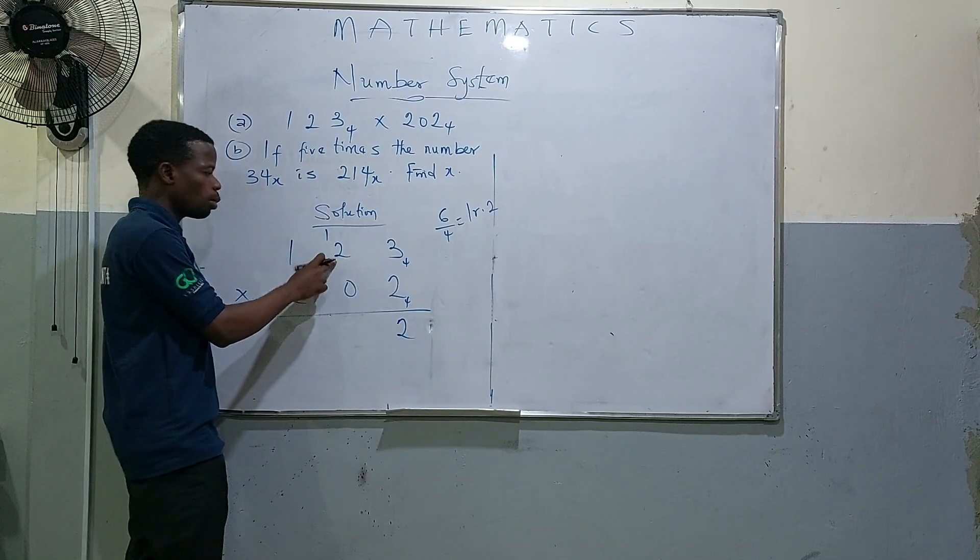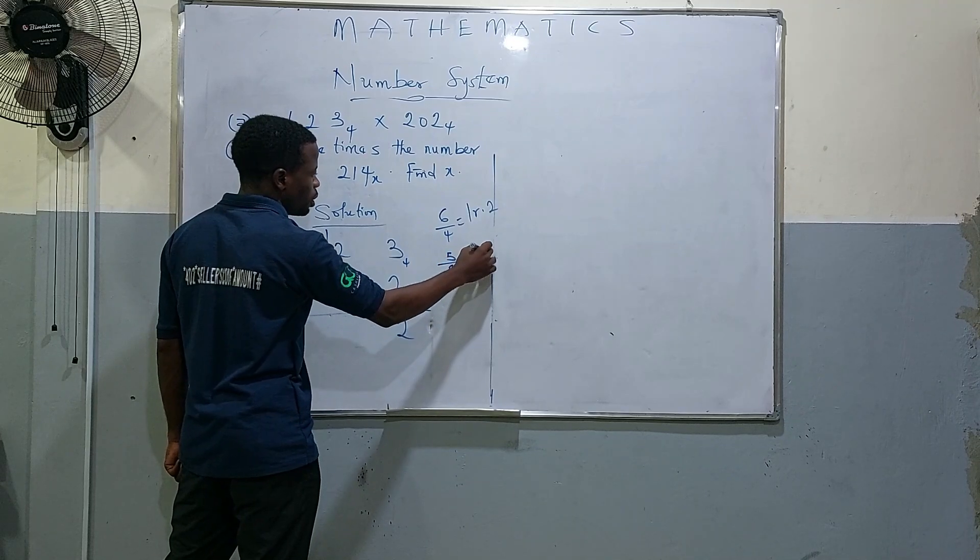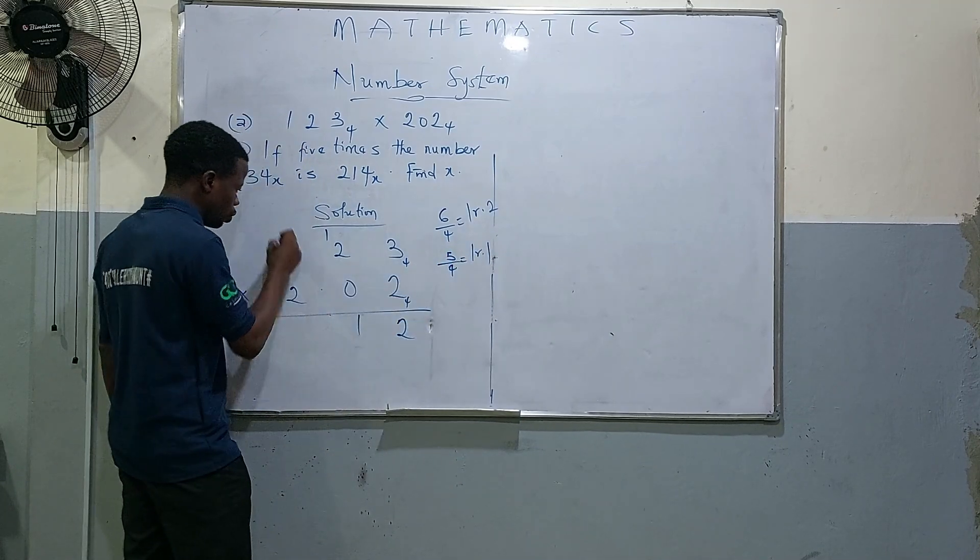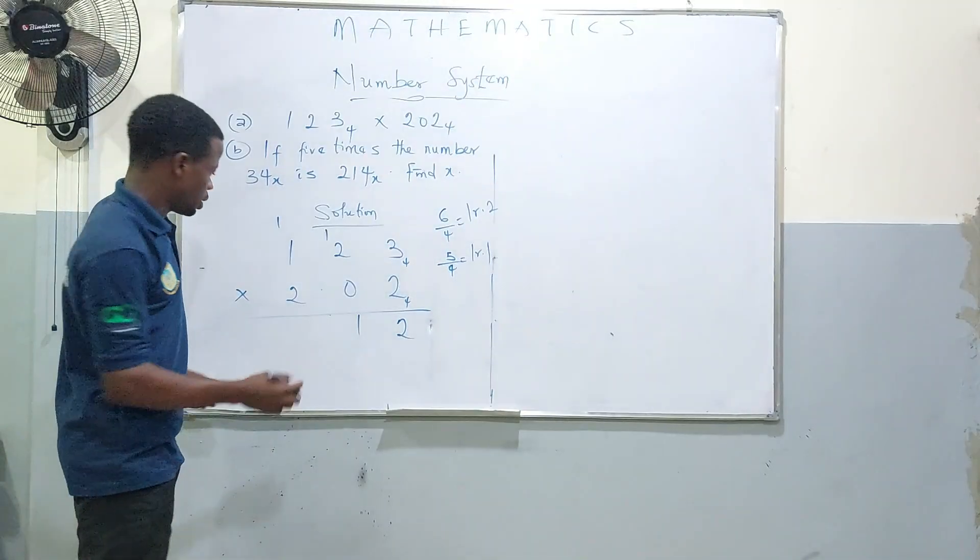2 times 2, 4 plus 1, 5. Do the same thing. You divide it by 4: 1 remainder 1. 5 remainder 1. 2 times 1, 2 plus 1, 3. 3 is less than this. You can write it.